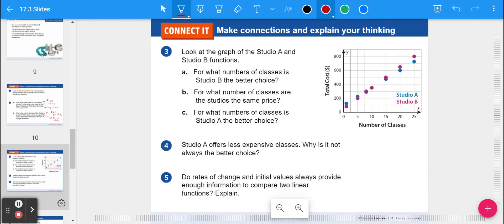So let's look at a different example. Actually, it's the same examples, but put on a graph. Studio A and Studio B are functions on the graph. So A says, for what number of classes is Studio B the better choice? If you look at Studio B, it's cheaper all the way up until this point. That's kind of the breaking point where now Studio B starts to be more expensive. So Studio B is a better choice up to 10 classes. So for what numbers of classes is Studio A the better choice? Above 10 classes. Number four. Studio A offers less expensive classes. Why is it not always the better choice? It's because of that initial value. Higher starting cost. That's why it costs more for the beginning at least.